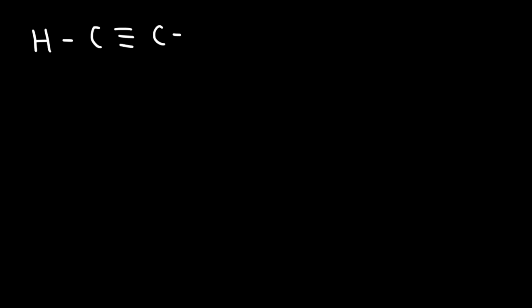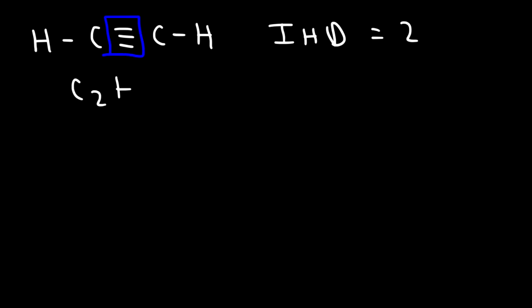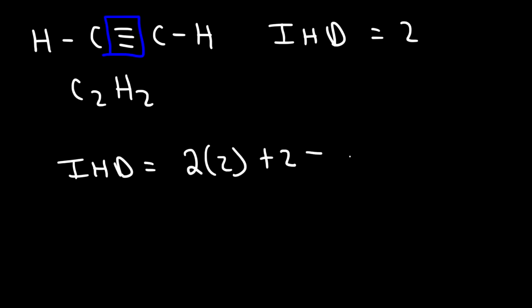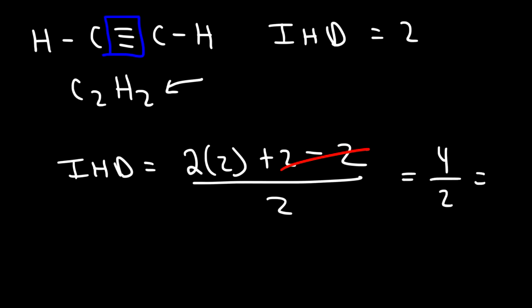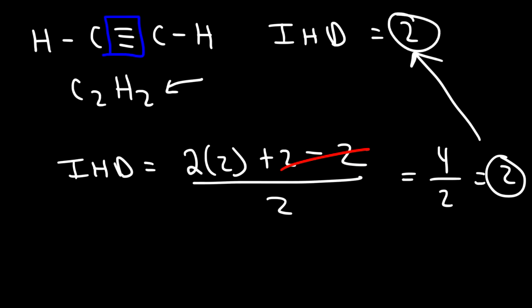What is the index of hydrogen deficiency of a triple bond? A triple bond has an IHD of 2. Acetylene has the formula C2H2, so: (2×2 + 2 − 2) / 2 = (4 + 2 − 2) / 2 = 4/2 = 2.